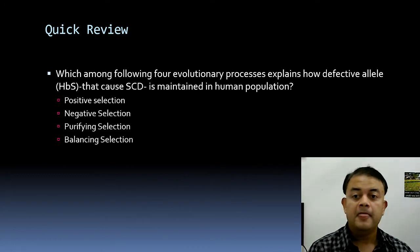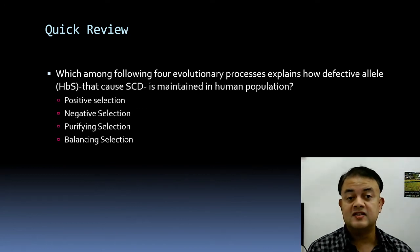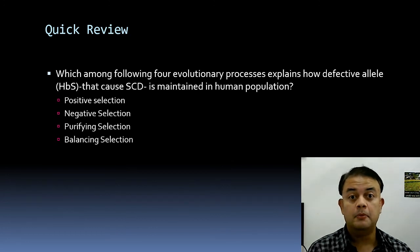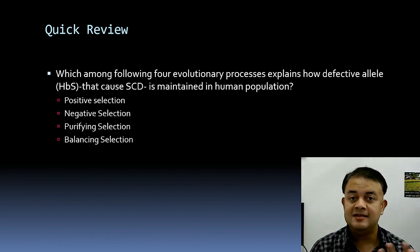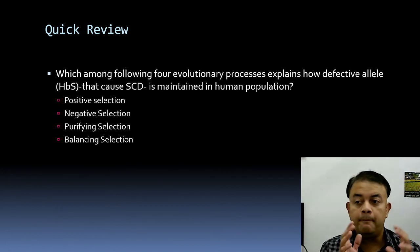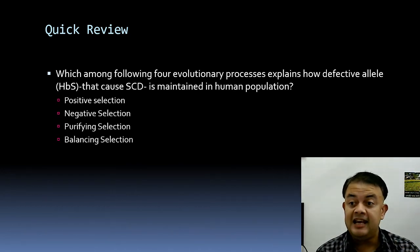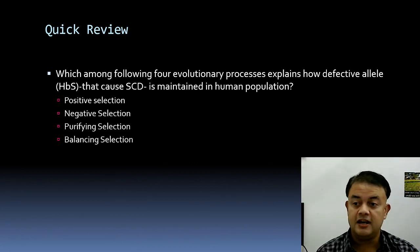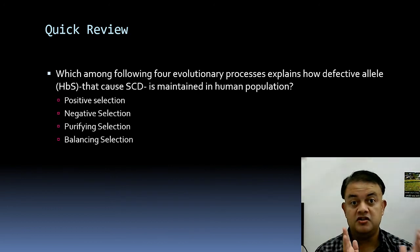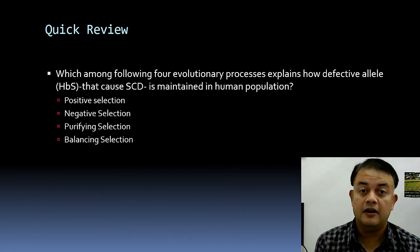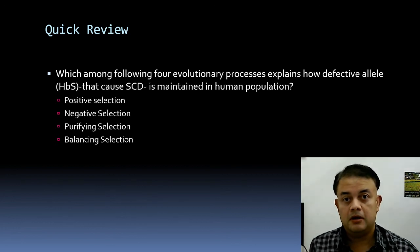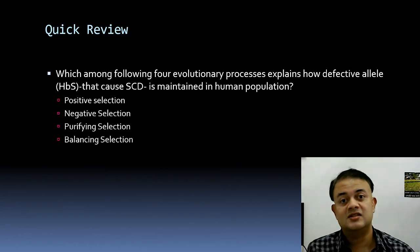A-to-T is confirmed as one of the eight possible transversion errors. The second question: which evolutionary process explains how the defective HbS allele causing sickle cell disease is maintained in the human population? The answer is balancing selection — selective processes by which multiple alleles are actively maintained in the gene pool at frequencies greater than expected from genetic drift alone.